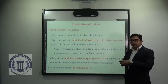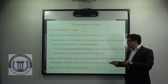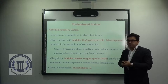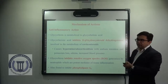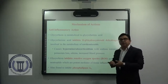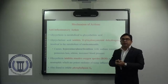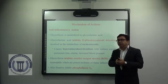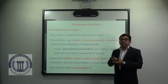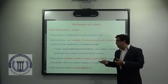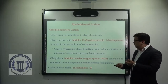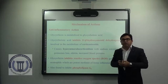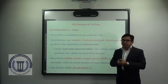Glycyrrhizin is also found to inhibit phospholipase A2. As you may recall from pharmacology or pathology, phospholipase A2 is responsible for the production of arachidonic acid, which in turn is responsible for the production of prostanoids and leukotrienes, which are inflammatory mediators. So by inhibiting phospholipase A2, it can indirectly inhibit the inflammatory conditions associated with various diseases.